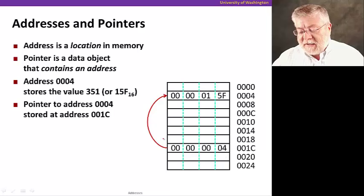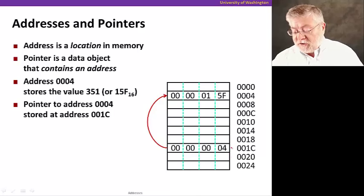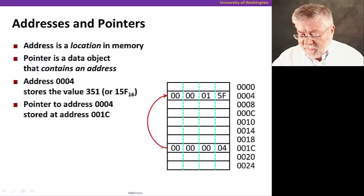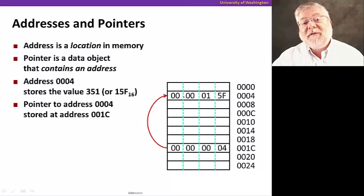That's what makes it a pointer, the fact that I interpret it that way. I could have just as easily have interpreted that number as just the number four. That would have been a data value stored at that location. But I am now choosing to interpret it as an address, in which case it is a pointer to a different location.